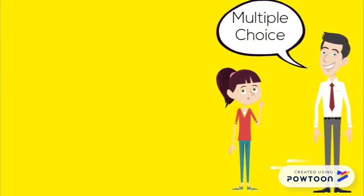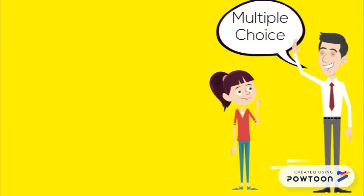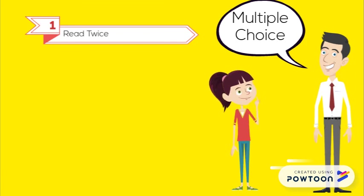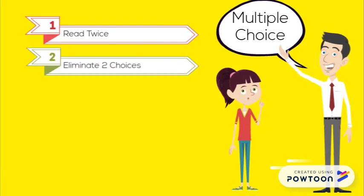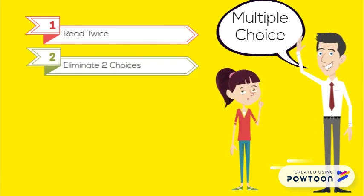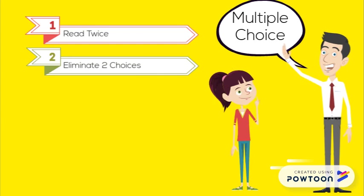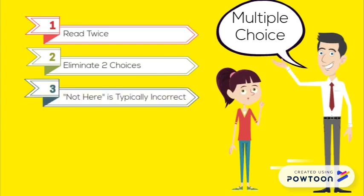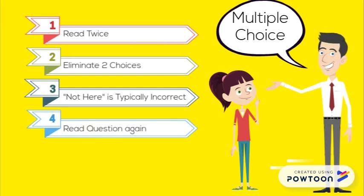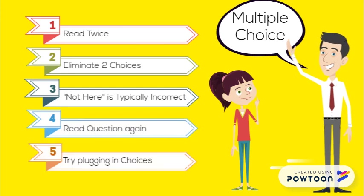Tips for answering multiple choice questions: first, read the question twice; next, try to eliminate two of your choices; third, 'not here' is typically not a correct answer; fourth, read your question again; and finally, try plugging in your choices.